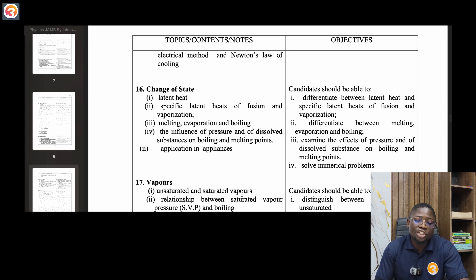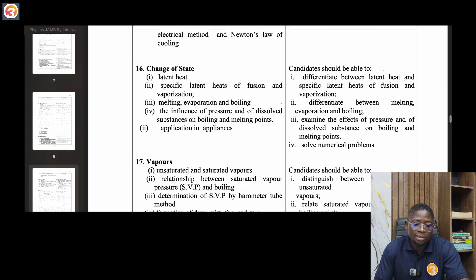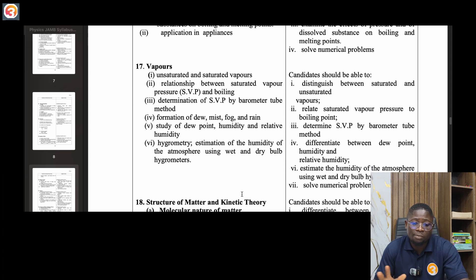Sixteen, change of states. Latent heat, specific latent heat of fusion and vaporization, melting, evaporation and boiling, influence of pressure and of dissolved substances on boiling and melting point, applications in appliances. Seventeen, vapor: unsaturated and saturated vapors, relationship between saturated vapor pressure and boiling, determination of saturated vapor pressure by barometer tube method, formation of dew, mist, fog and rain. Study of dew point, humidity and relative humidity, hygrometry, estimation of humidity of the atmosphere using wet and dry bulb hygrometers.